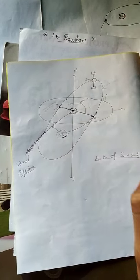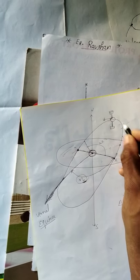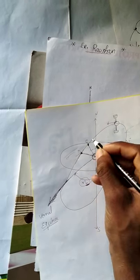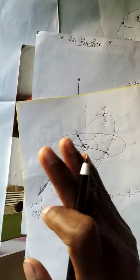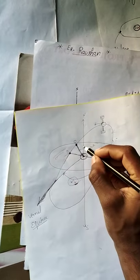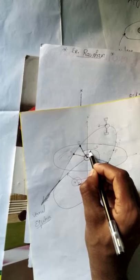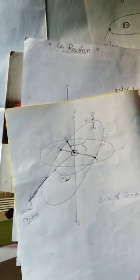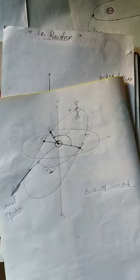So vernal equinox to ascending node is known as Omega — the longitude of ascending node. If we see the satellite moving from point P to point Q, the point of minimum distance is the perigee. From the perigee point to the line of node, the angle is known as lowercase omega (ω) — the argument of the periapsis, also called the angle of periapsis. Both names are the same.